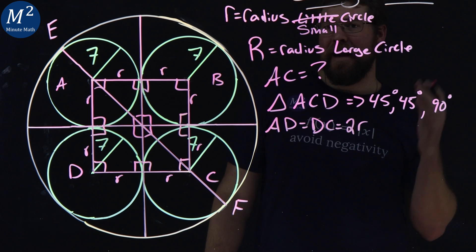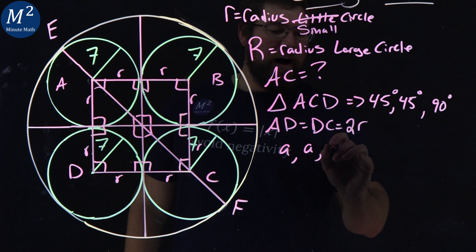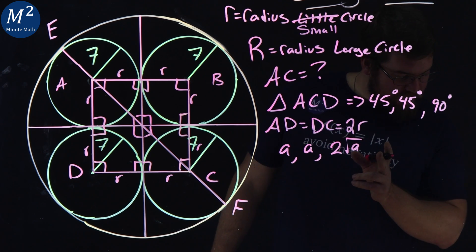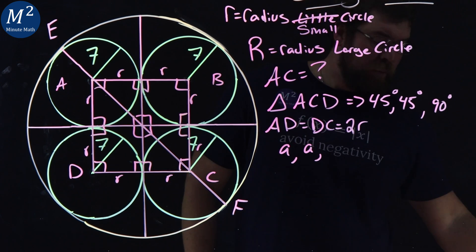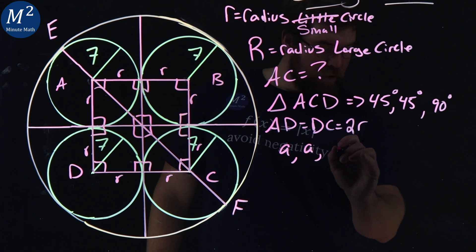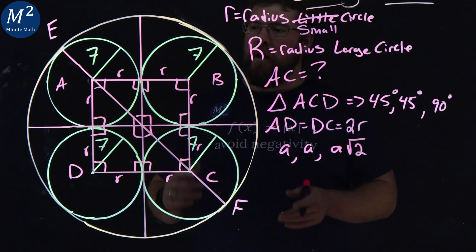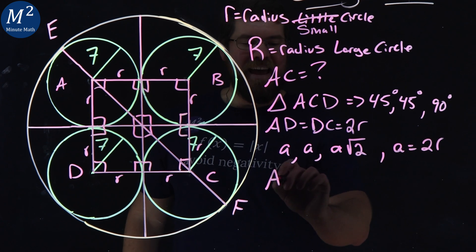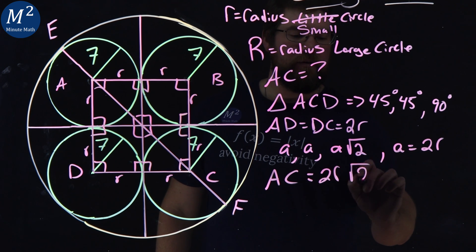What do we know about 45-45-90 degree triangles? The side lengths have a proportion of a, a, a√2. So if a, in this case, is 2r, that means the length of AC — the hypotenuse — is 2r√2.